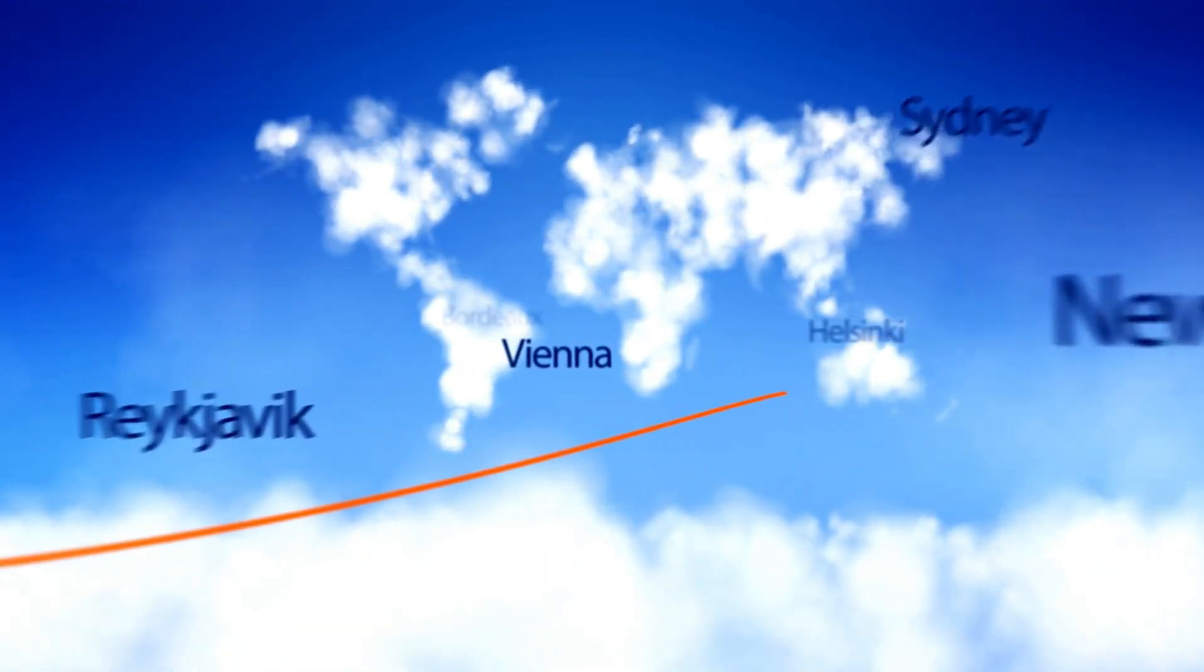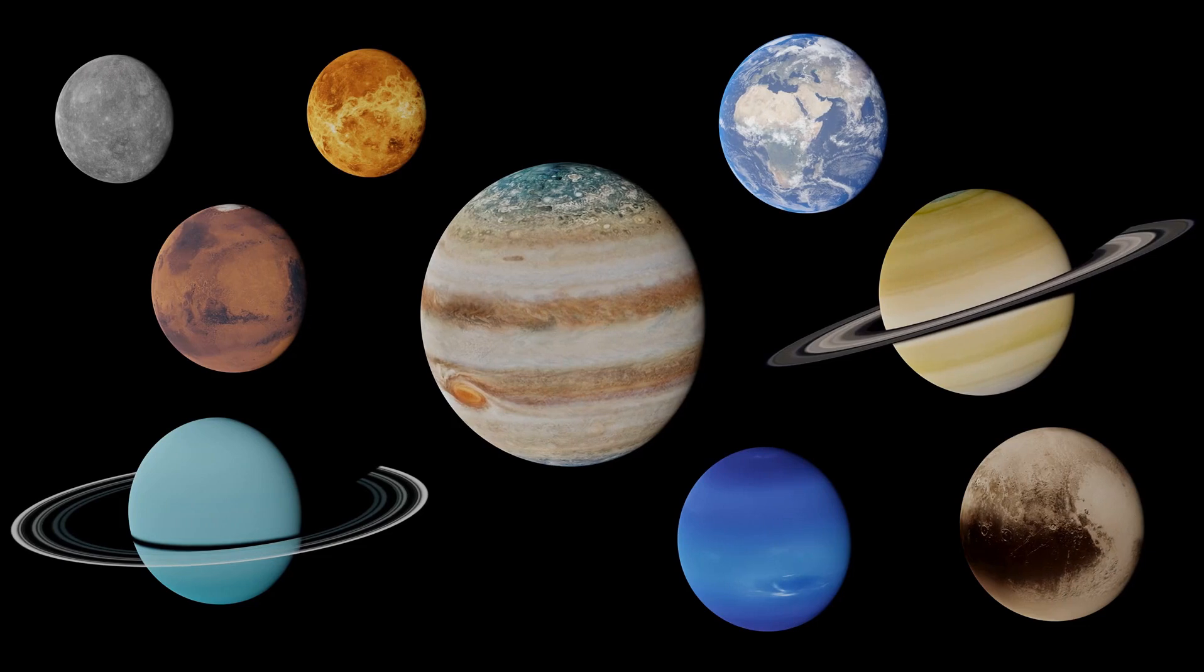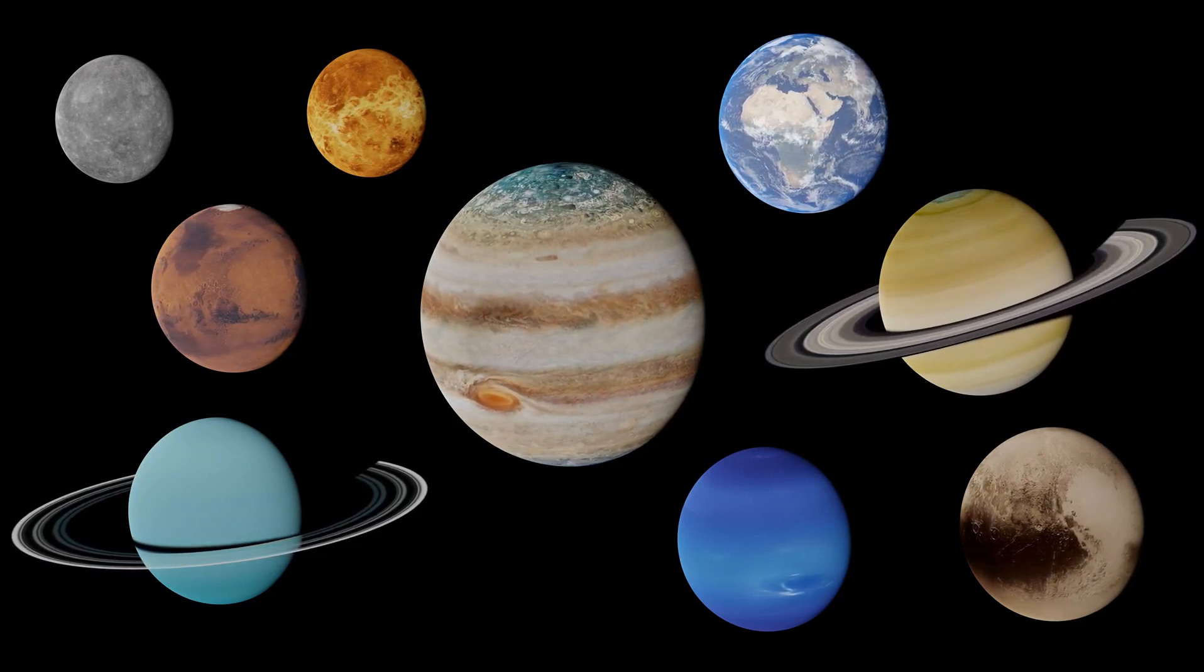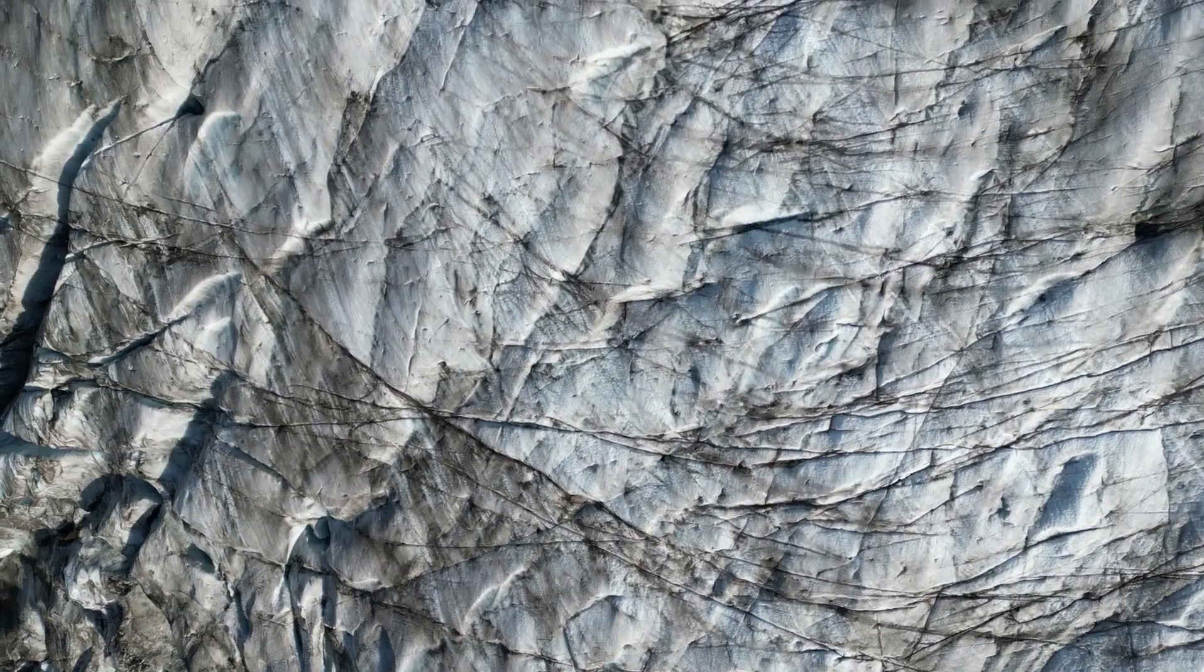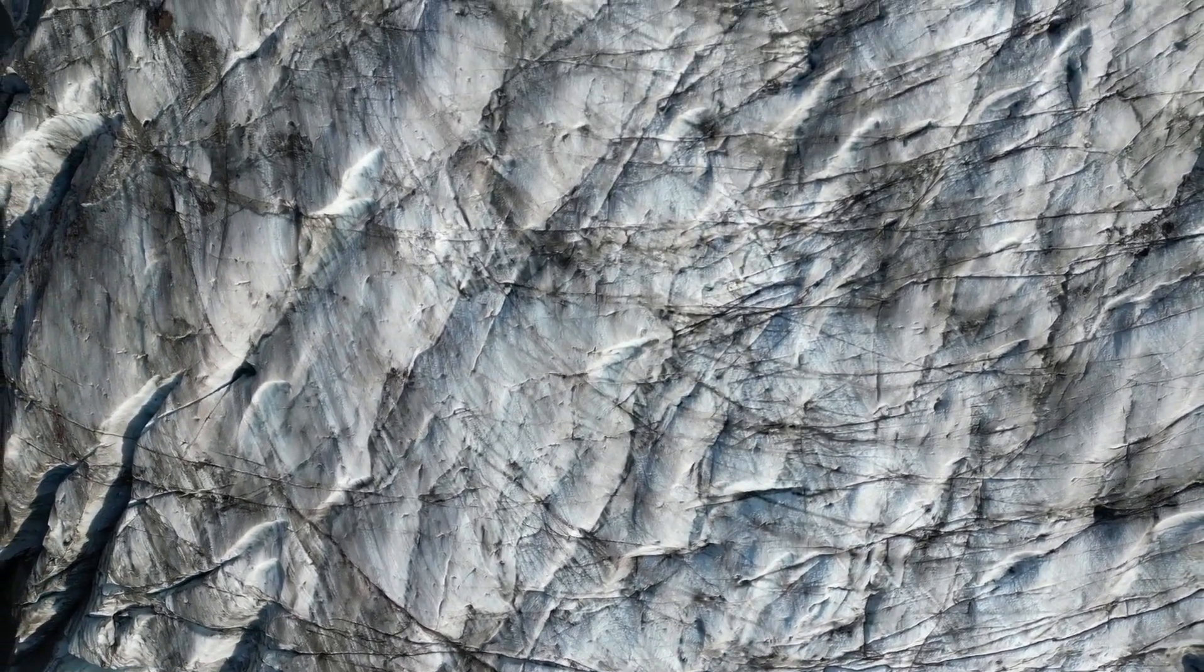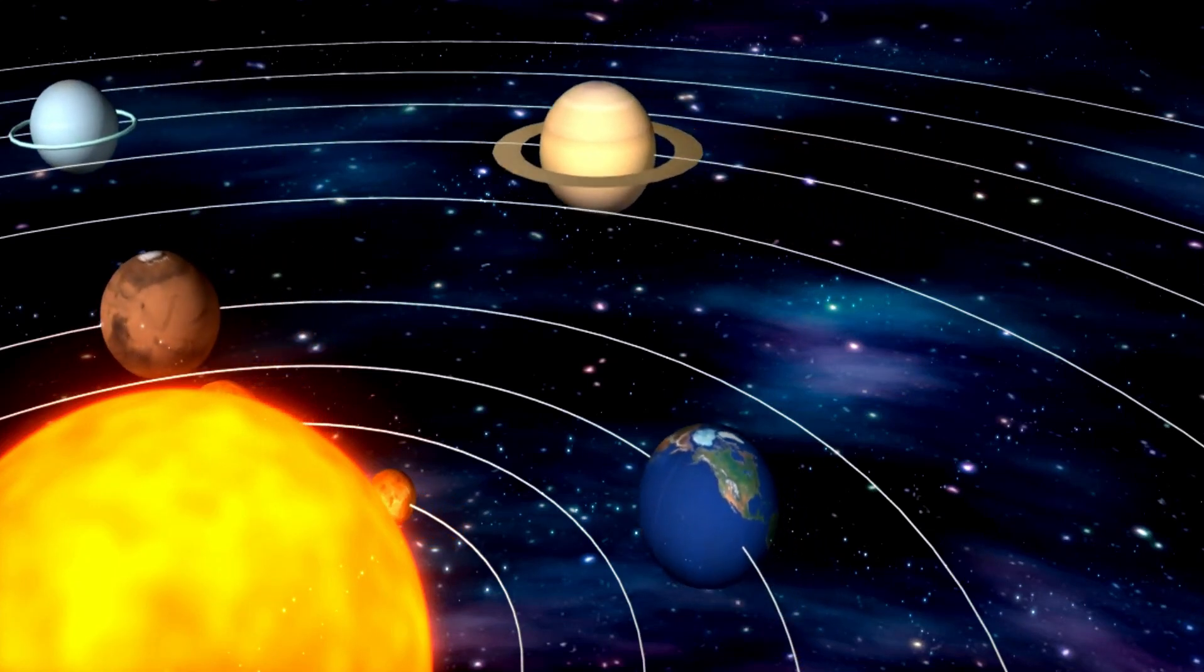The voyage continues. Our exploration of the solar system has revealed a cosmos of astonishing diversity. From the fiery inferno of Venus to the icy realms of the Kuiper belt, each planet, moon, and object tells a story of cosmic evolution, offering insights into the forces that shaped our celestial home.